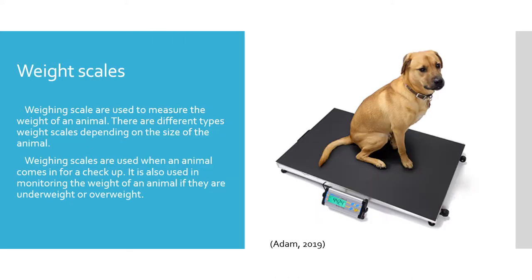Weighing scales. Weighing scales are used to measure the weight of an animal and can come in various different sizes depending on the species. Weighing scales can be used during the examination of an animal, as well as when checking an animal pre- and post-operation. They are also used to monitor the weight of the animal if they are under or overweight.